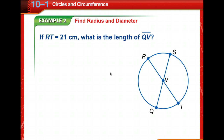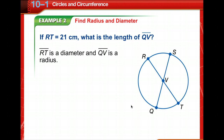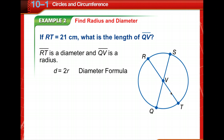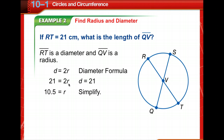Let's find the radius and the diameter. If RT is 21 centimeters, what is the length of QV? We know that all diameters and all radii have the same measure. RT is a diameter and QV is a radius. We know the diameter is two times the radius, so we substitute in: diameter equals 2 times the radius. Dividing both sides by two, the measurement of radius QV is 10.5 centimeters.